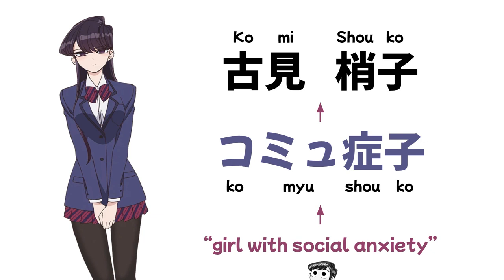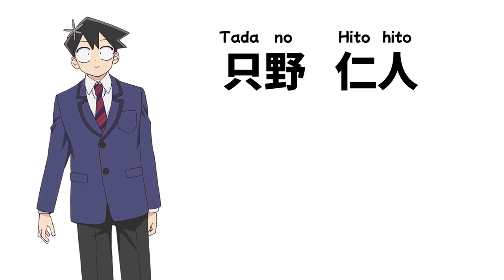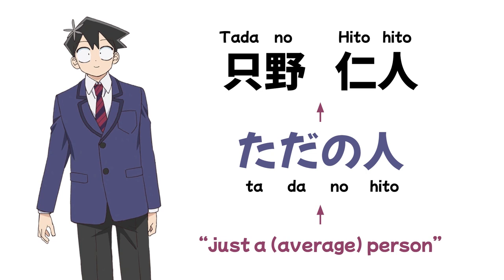Next up, Komi-san's first friend, Tadano Hitohito. A perfect name for him, as it is a pun on the phrase 'Tadano Hito,' which means 'just a person' or 'just an average person.' This refers to the fact that Tadano is average at almost everything — average looks, average height, average grades, etc.